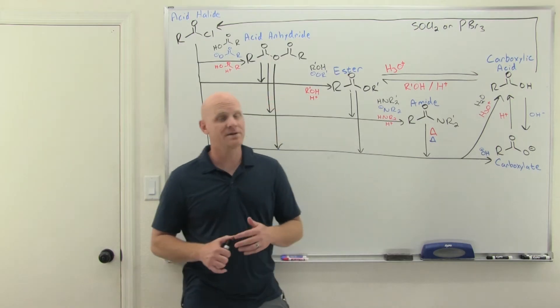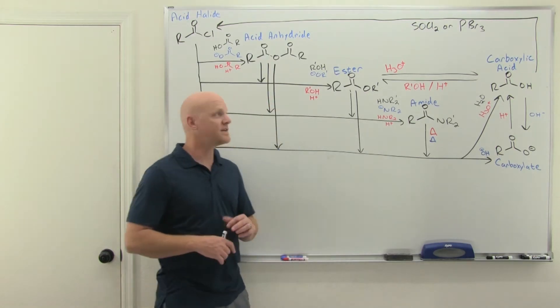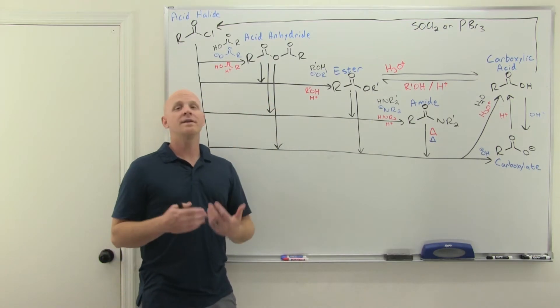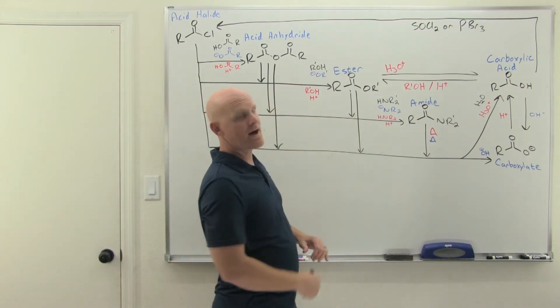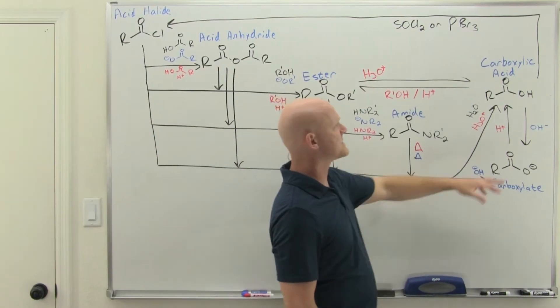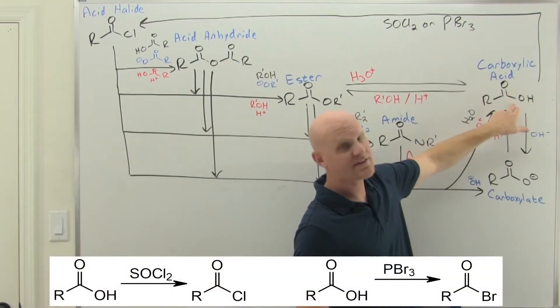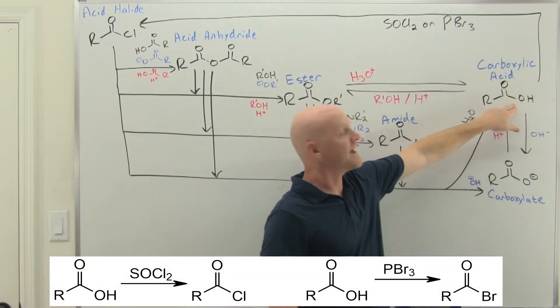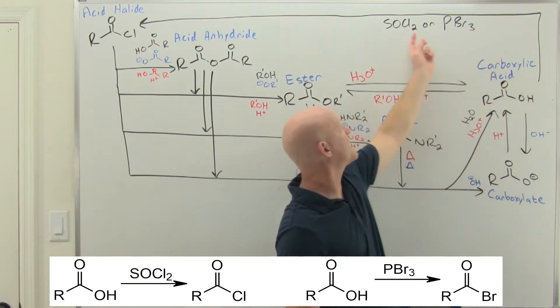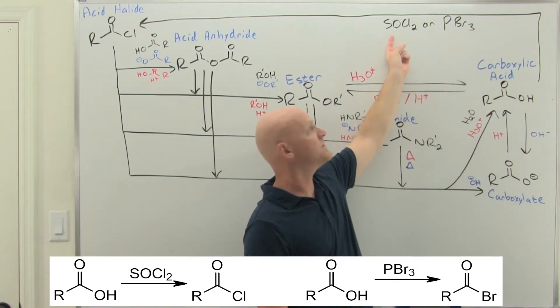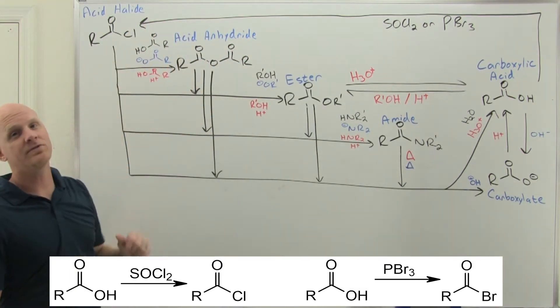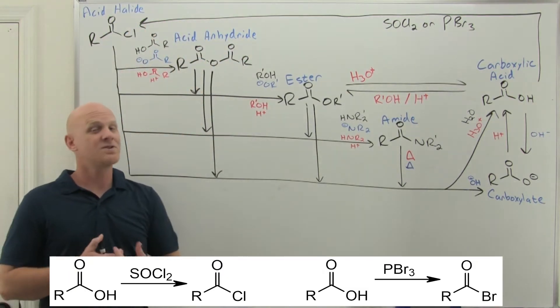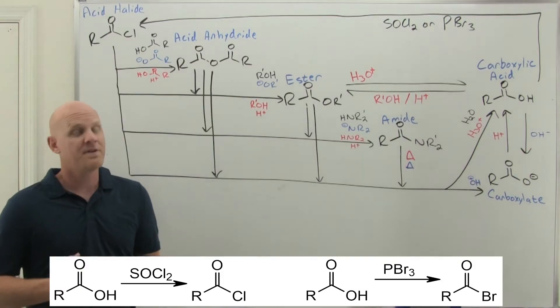Acyl halides: If you're following along on the study guide, we really only have one major way to synthesize an acyl halide. We covered it back in our lesson on nucleophilic acyl substitution. Take your carboxylic acid—that's your fuel for making acyl halides—and add either thionyl chloride (SOCl2) or PBr3 to convert it into the corresponding acyl chloride or acyl bromide.